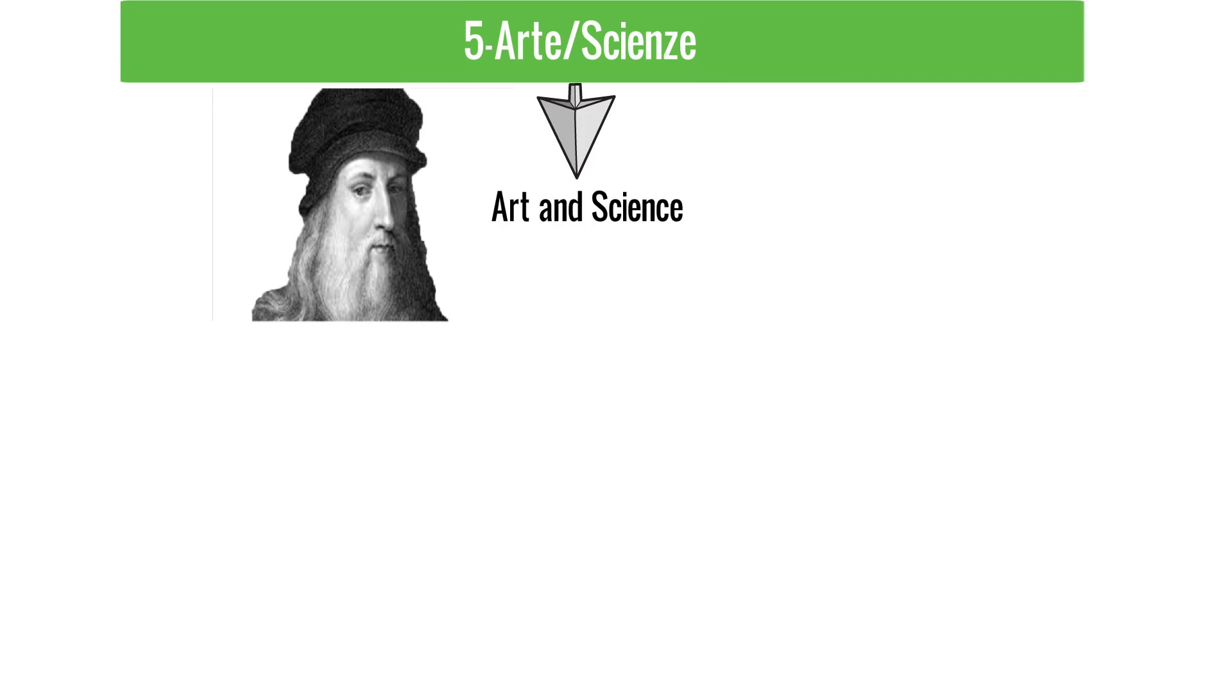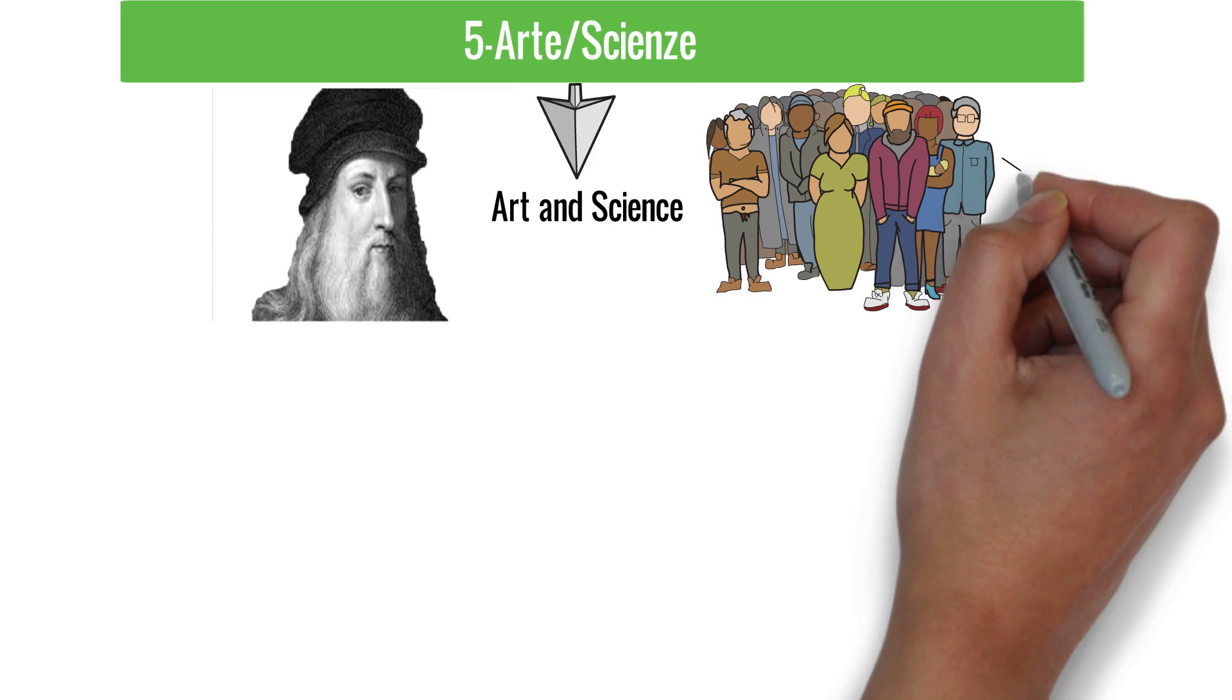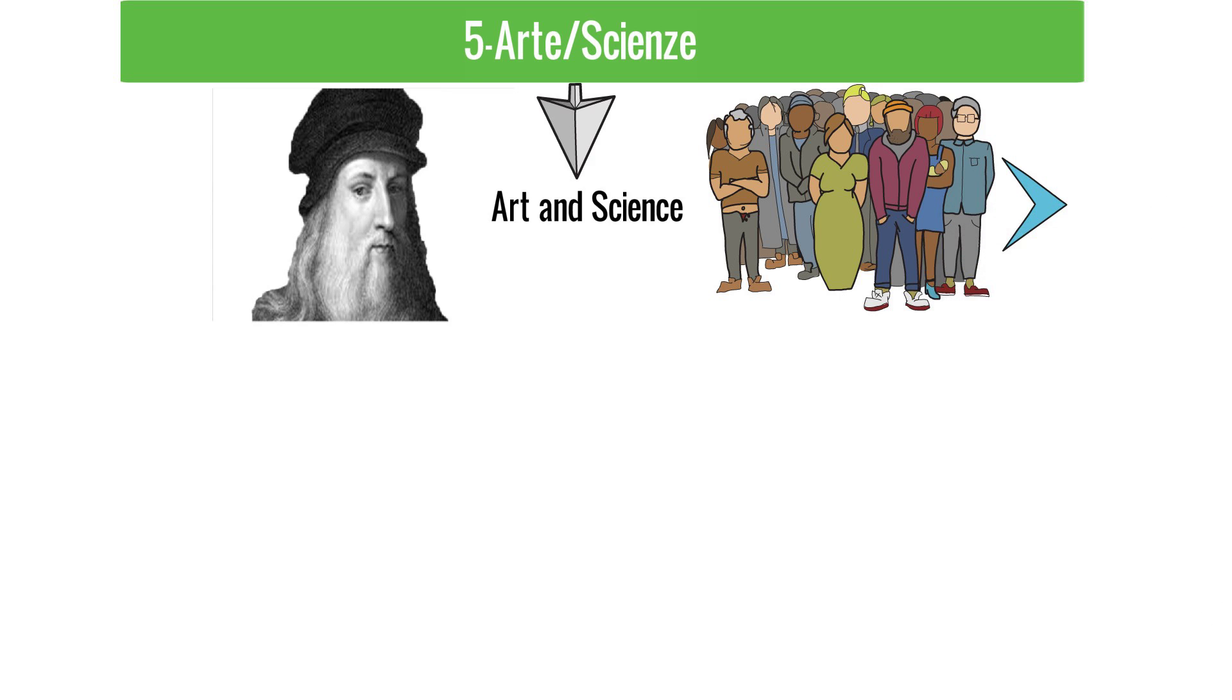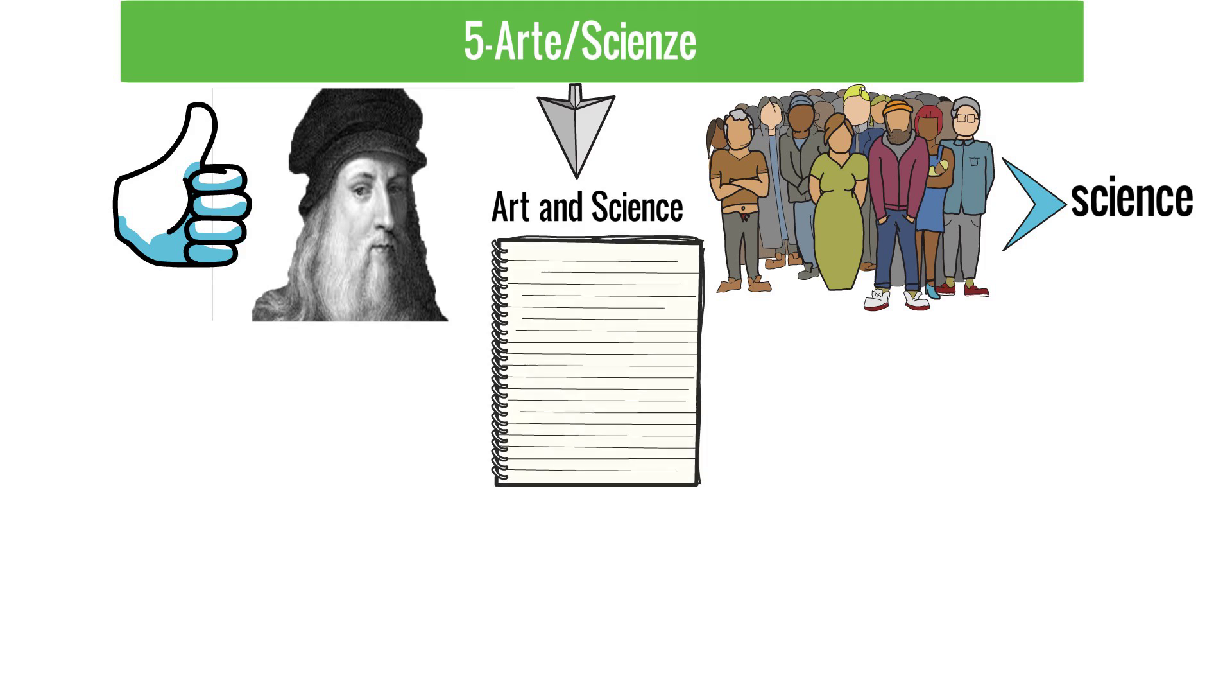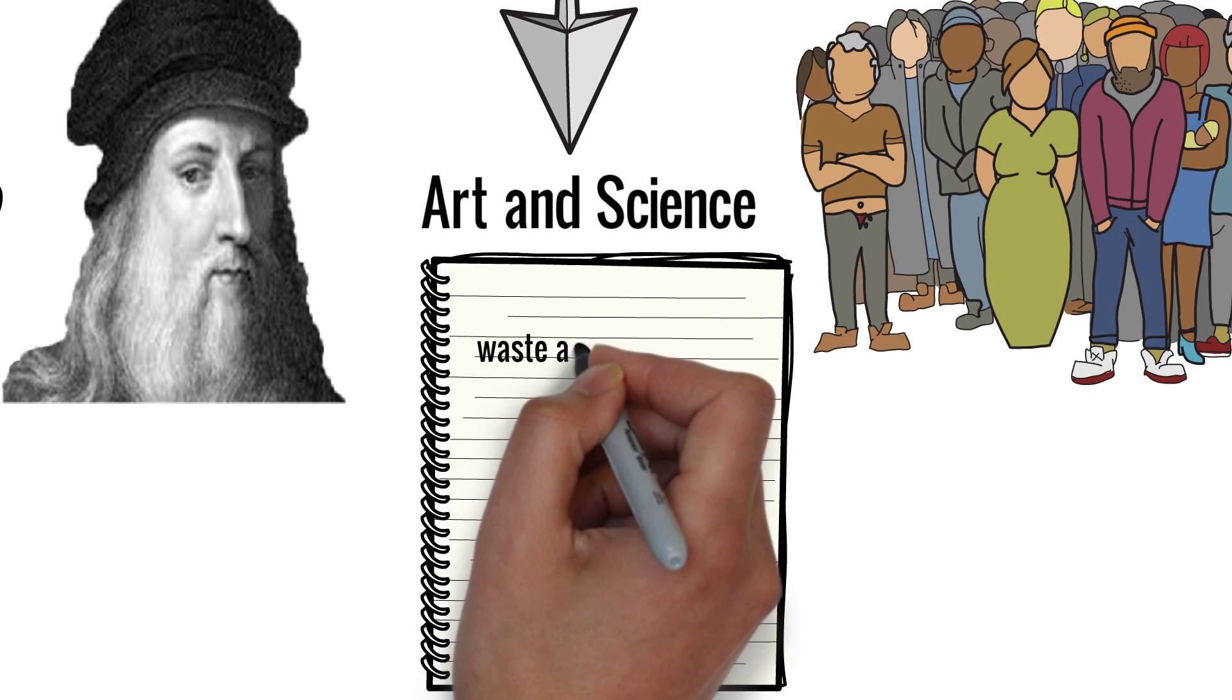Fifth, Arte Scienza. Meaning art and science. Da Vinci used to give equal importance to both science as well as art. But today, normal people's thinking has changed. Nowadays, people give more importance to science. For them, science is everything, and according to them, art is a waste and useless thing.